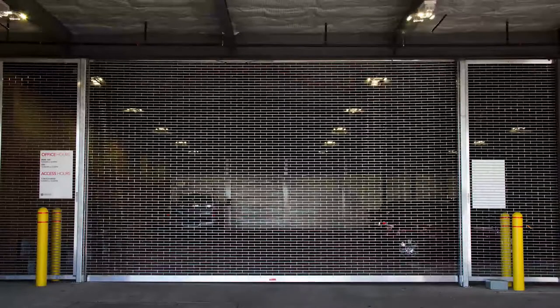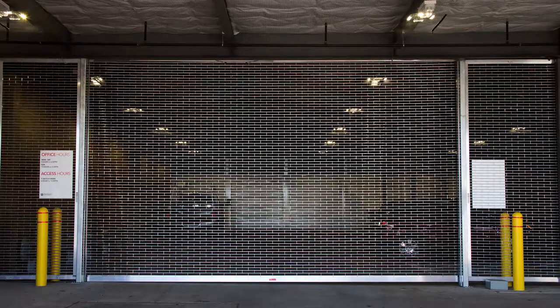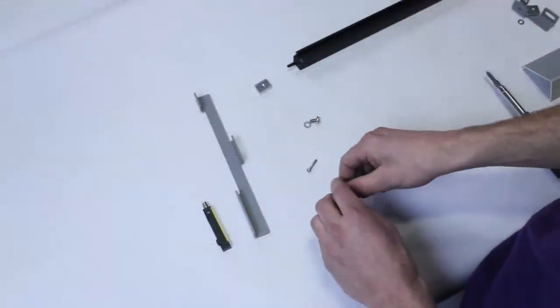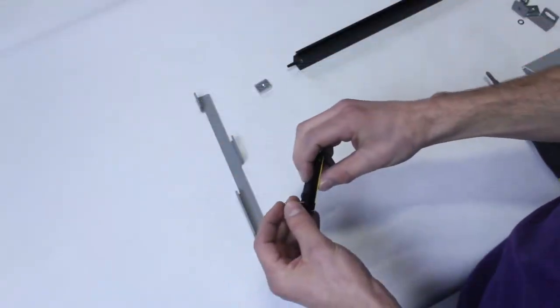For this video, we will focus on the non-operator side of the door. First, attach the photo eye to the bracket using the two number six screws provided.